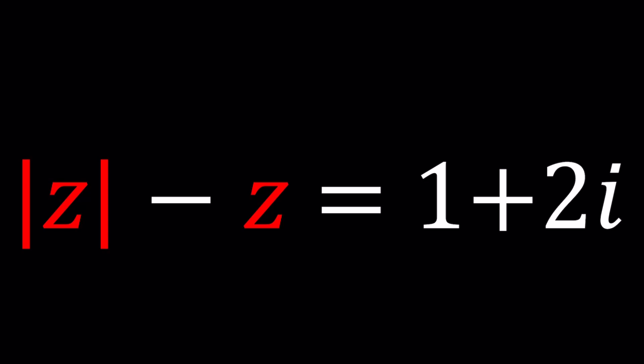We have the absolute value of z minus z itself equals 1 plus 2i. A couple things to remember: absolute value of z is always a non-negative real number. It represents the distance from 0 on the complex plane, and it's given by the square root of something squared plus something else squared - those are the real and imaginary parts of z. It's always non-negative. If it's 0, that means we're talking about z being 0. In this case, you can safely say it's not going to be 0, so we have a non-zero z, which means the absolute value of z is going to be positive. We can write z in so many different forms. Let's go ahead and see if we can solve this problem from different perspectives.